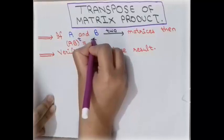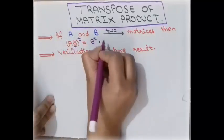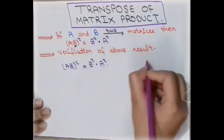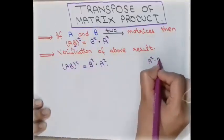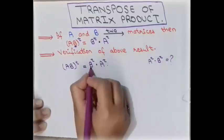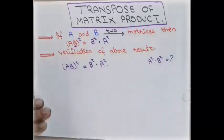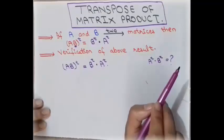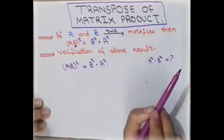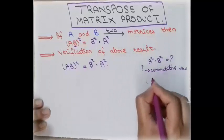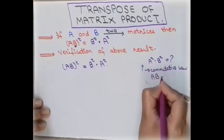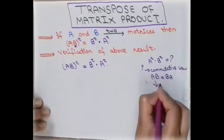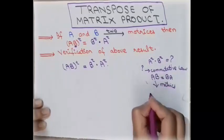By the property of transpose of matrices, the transpose of the matrix product AB equals the transpose of the second matrix multiplied by the transpose of the first matrix. A question arises: can we write this as the transpose of the first matrix multiplied by the transpose of the second matrix? The answer is no, because in matrix algebra the commutative law of multiplication does not hold. The commutative law says AB equals BA, but this does not hold for matrices under multiplication.